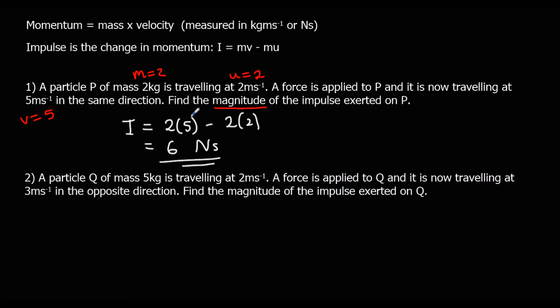A particle Q of mass 5 kilograms is traveling at 2 meters per second. That's the initial velocity. A force is applied and now it's traveling at 3 meters per second in the opposite direction. So that V is negative 3. It's changed direction.